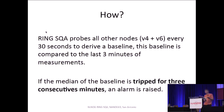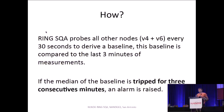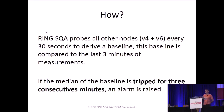Every Ring node runs the SQA daemon. Every 30 seconds it probes all other nodes to test for reachability, both on V4 and V6. From this constant probing of all Ring nodes, it derives a sort of baseline. At any given moment, some Ring nodes are unreachable or rebooting, so there's natural noise in unreachability. But what's not natural is a sudden increase in the number of unreachable nodes — and Ring SQA is designed to detect these spikes. If the last three minutes' median is higher than the previous 27 minutes, it concludes something is wrong with your network.